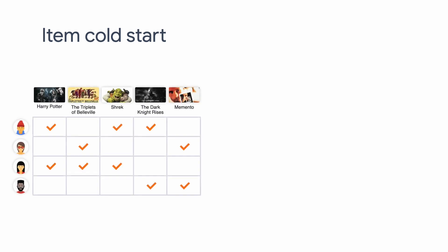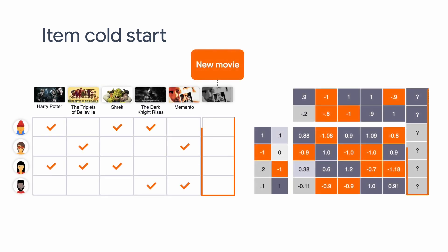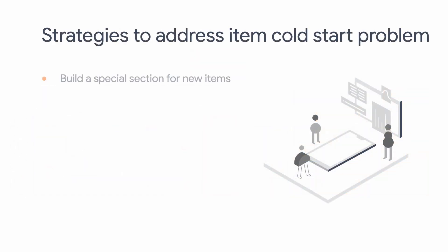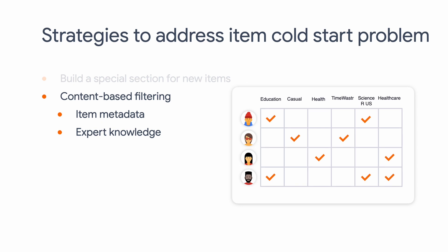Moving on to Item Cold Start. Item Cold Start means a new candidate item arrives and no user has interacted with it, although you have historical data on all the users and other items. The general strategy to mitigate Item Cold Start is to elicit more user interactions on it. One easy way is to create exposure to cold items by setting up a dedicated new arrivals section in your app UI. Another common approach is to use content-based filtering, which could leverage item metadata and expert knowledge to recommend items based on item similarities. The example we gave is to have experts label apps in different categories. On top of that, you could leverage computer vision to analyze product images, or NLP techniques to examine product descriptions. All these techniques can help you associate cold items to similar items already in your recommendation engine.